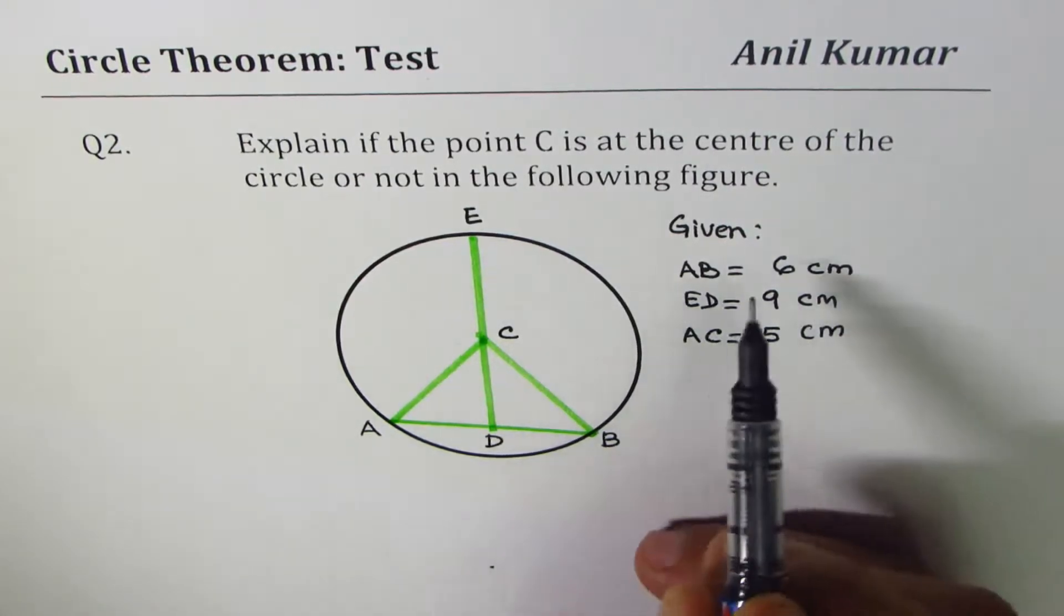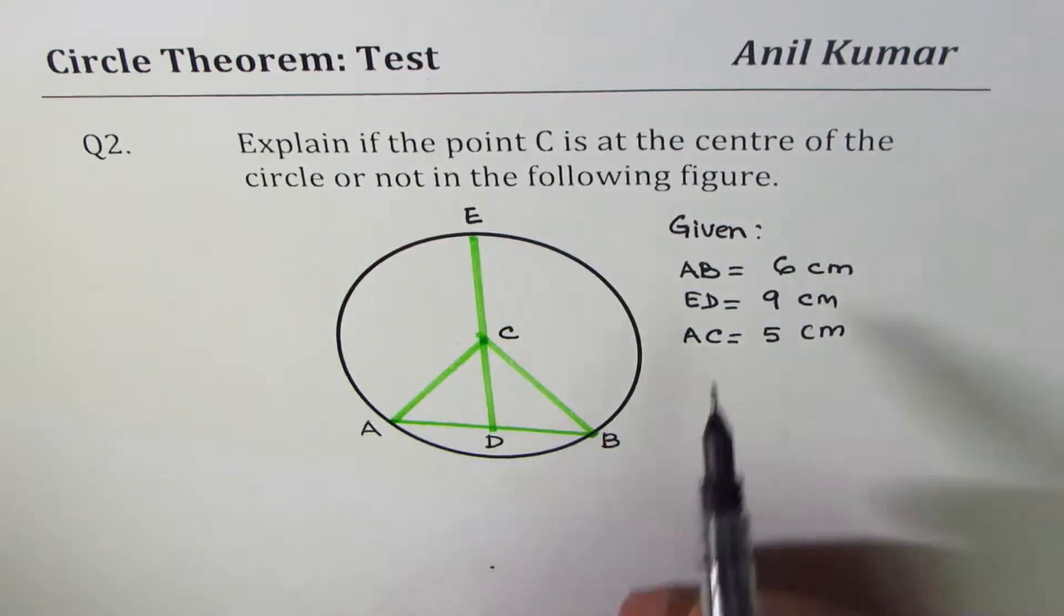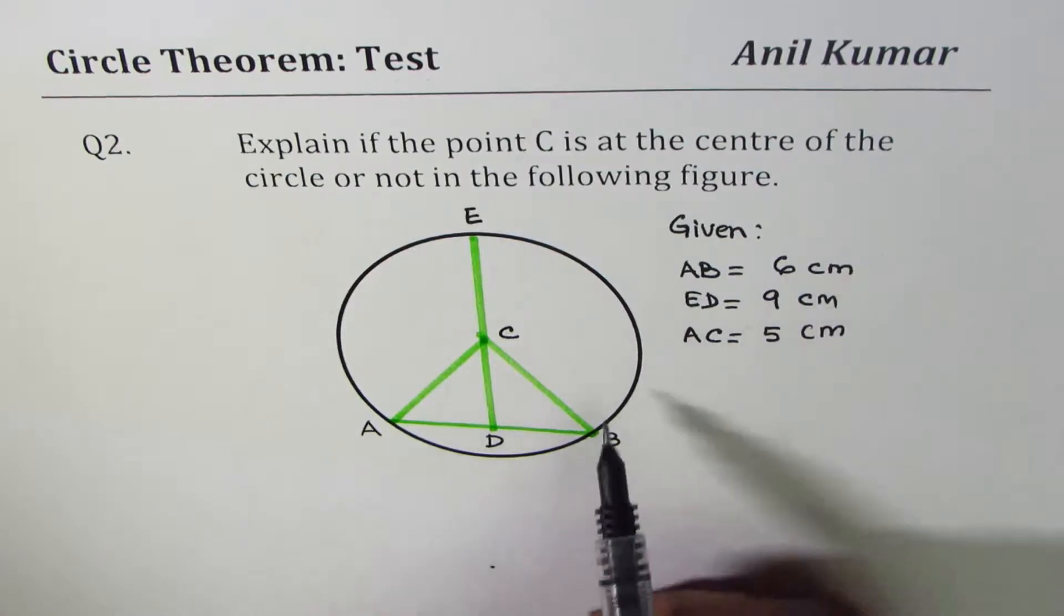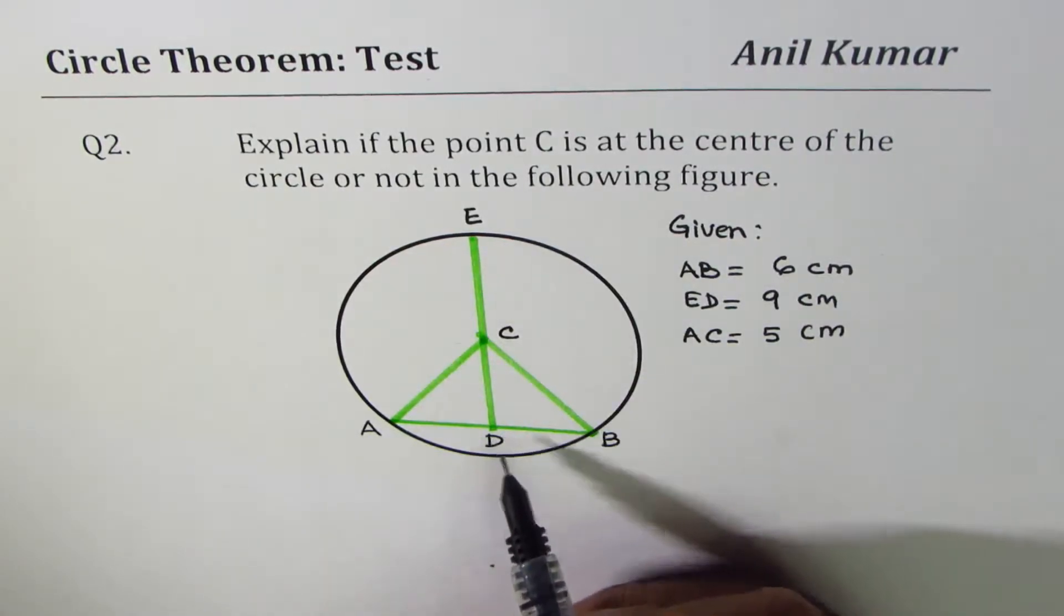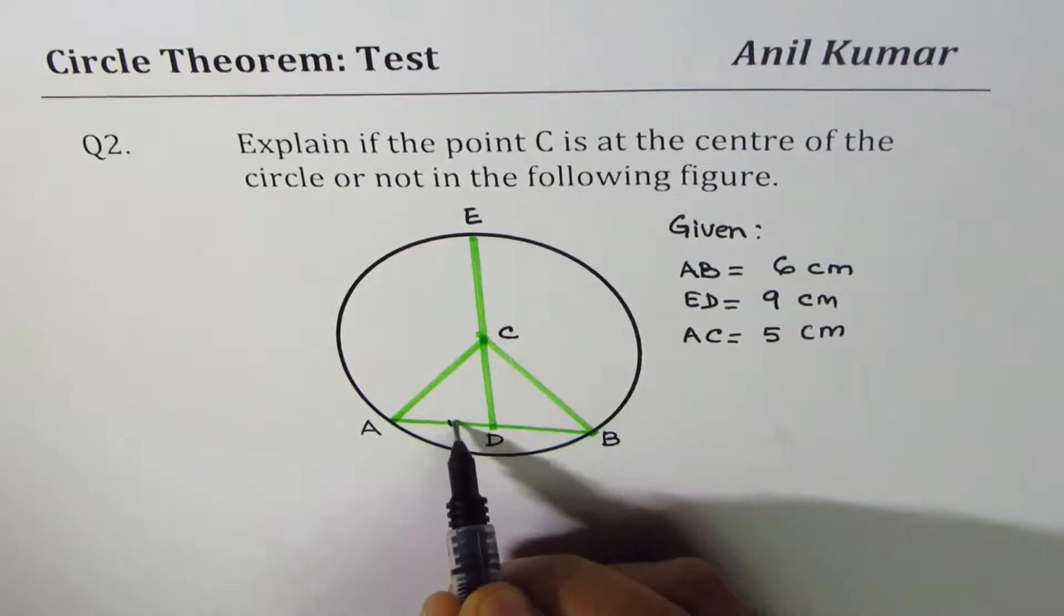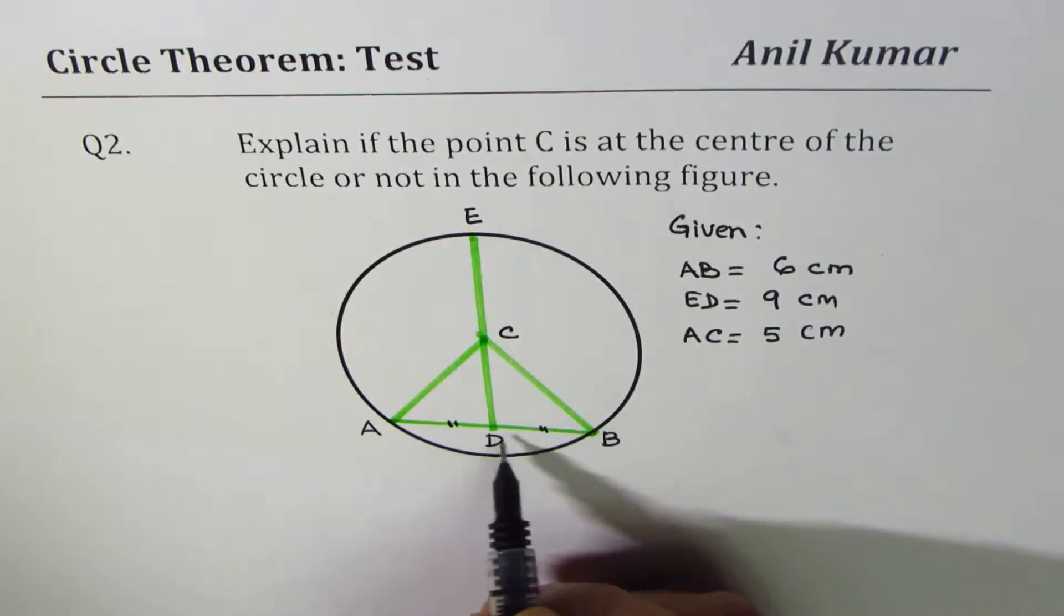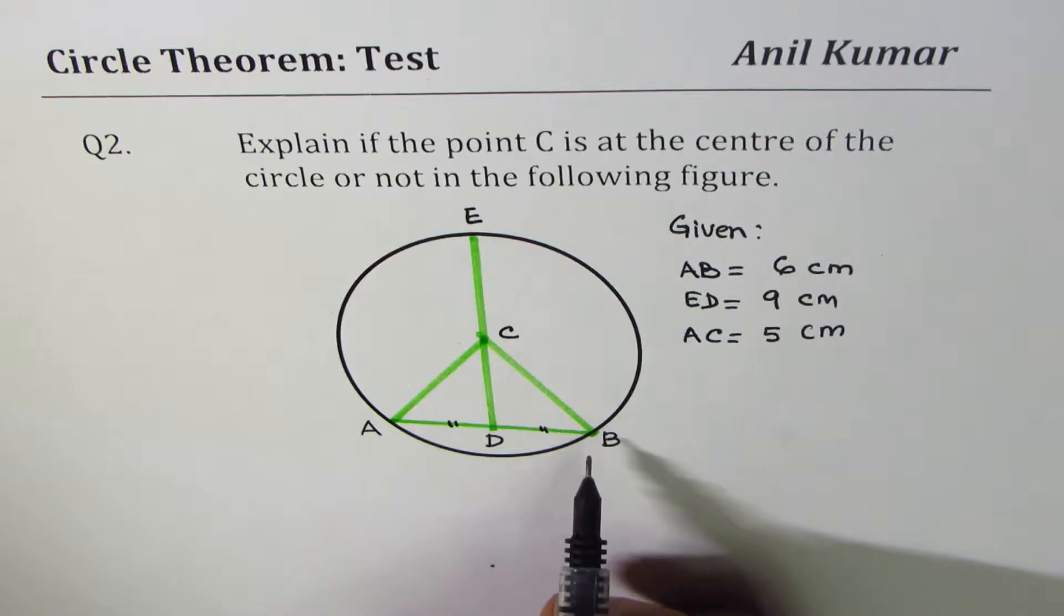So in this figure, we are given AB, which is a chord, 6 centimeter. ED is a line joining the center of the chord. Let me mention here, D is the midpoint of chord AB.